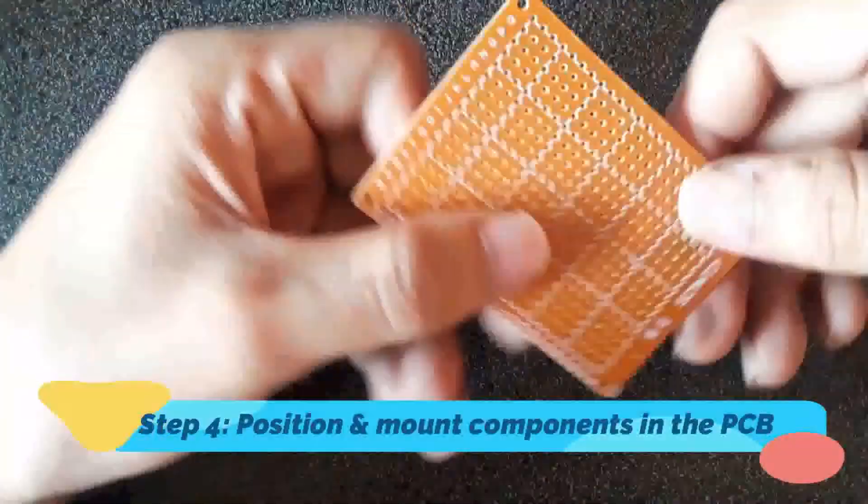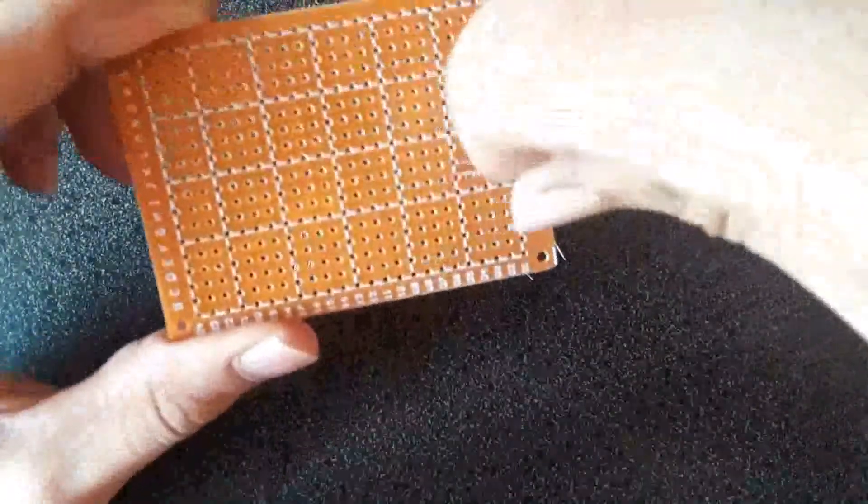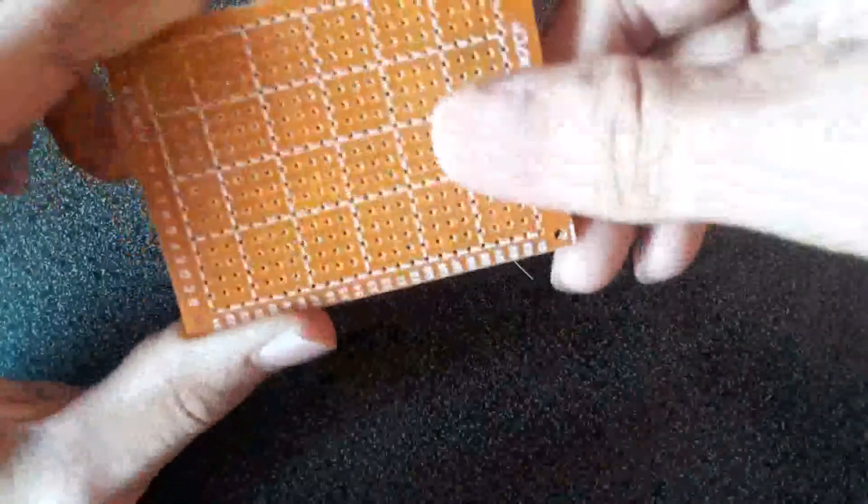Step 4: Position and mount components in the PCB. Placing the components into the dotted PCB to adjust distance.